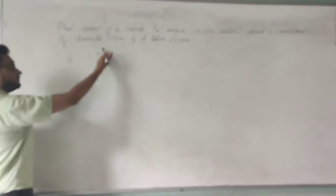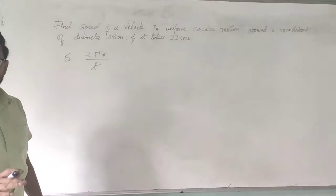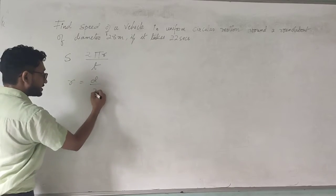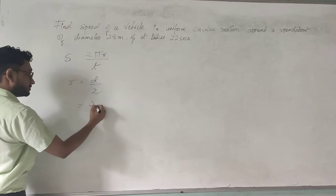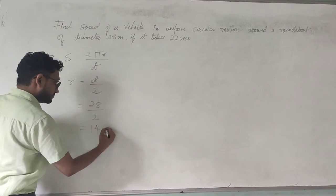But first of all we need to find the radius because we have been given the diameter. So don't get confused. Observe the question carefully every single time. So radius is given as diameter by 2. 28 by 2 will give you 14 meters.